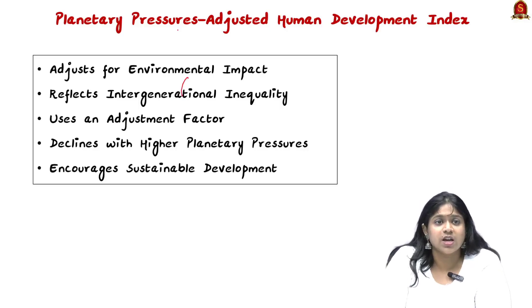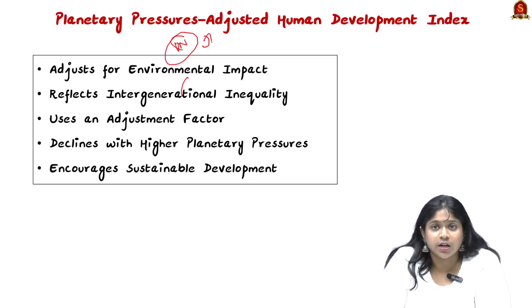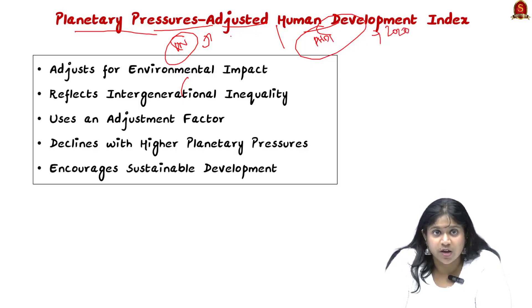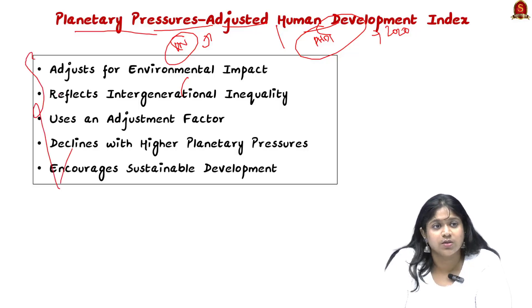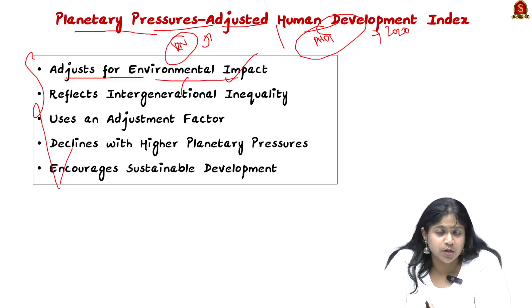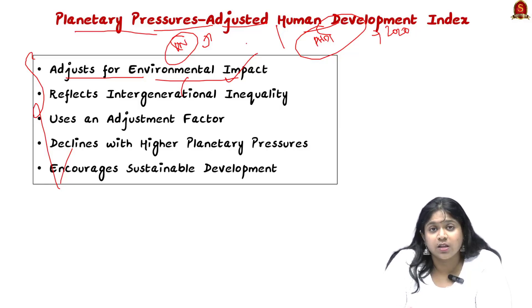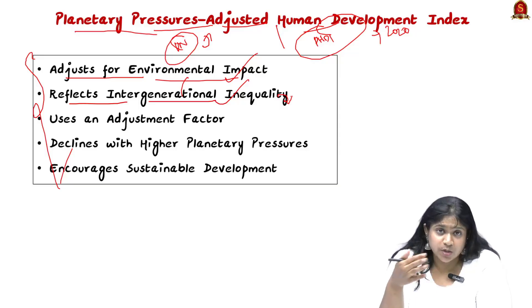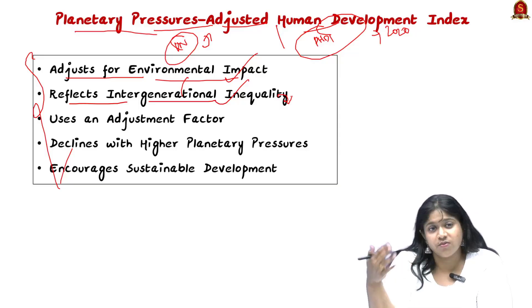Since the HDI has been widely criticized, the UN introduced an alternative index: the Planetary Pressures Adjusted Human Development Index, known as the PHDI, introduced in 2020. It adjusts for environmental impact by including carbon emissions per capita and material footprints. It also reflects intergenerational inequality by accounting for how environmental degradation affects sustainability for future generations.